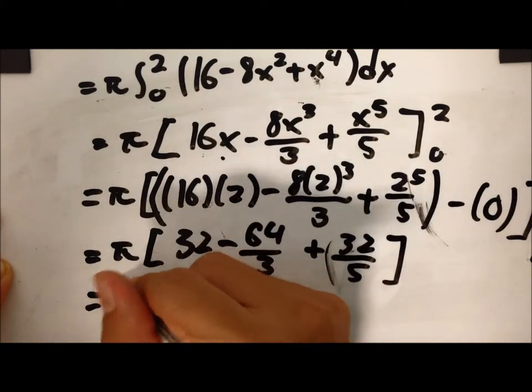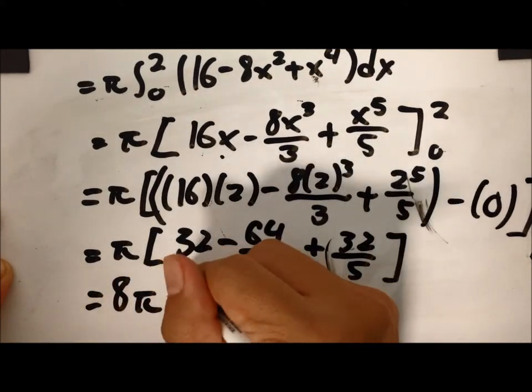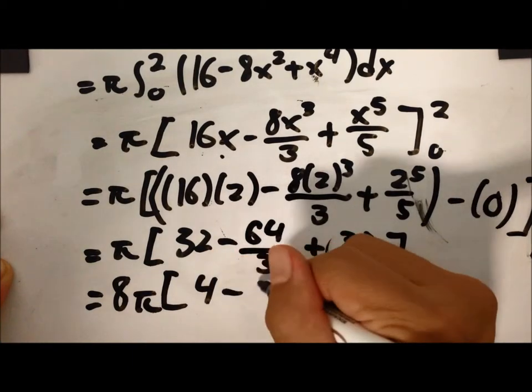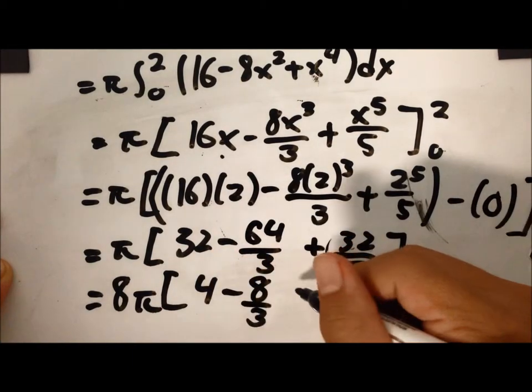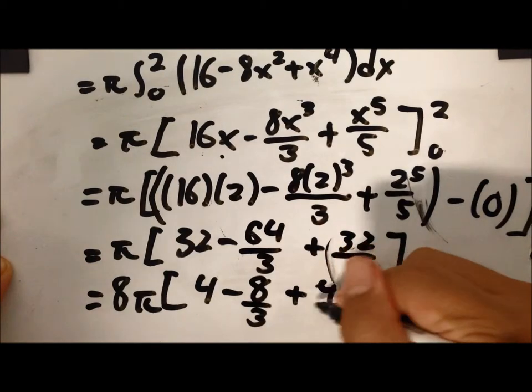Then I factor out an 8, which would leave you with 4 minus 8 over 3 plus 4 over 5.